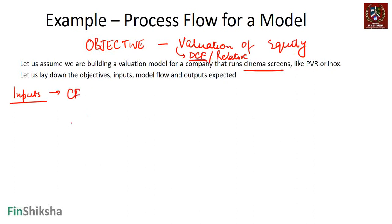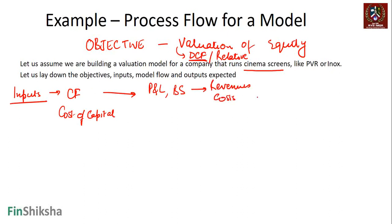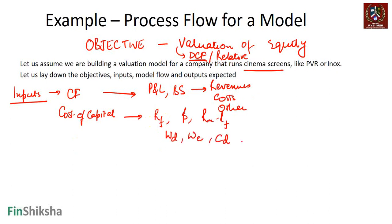For DCF, we need the cash flows and we need the cost of capital. Which basically means that in terms of cash flows, I need the P&L statement, I need the balance sheet, or I need revenues. I need costs and I need other headers as well. In terms of cost of capital, I need the risk-free rate, I need the beta, I need the RM minus RF. If I am using cost of capital, I need the weight of debt and weight of equity, cost of debt, and tax rate as well. These are my inputs.